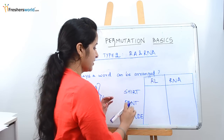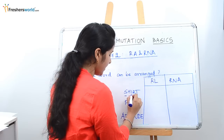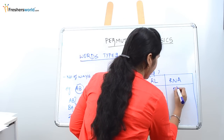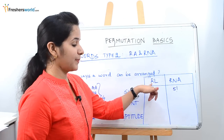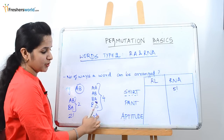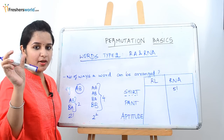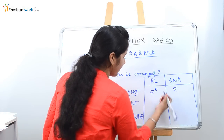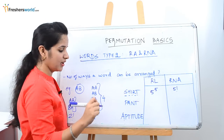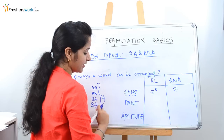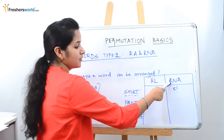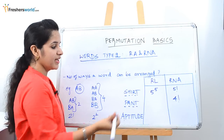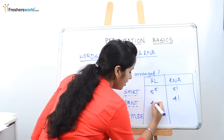Let's take the word SHIRT with five letters. In case of repetition not allowed, it is five factorial. In case of repetition allowed, it is five to the power five. For PANT with four letters, repetition not allowed gives four factorial, and repetition allowed gives four to the power four.